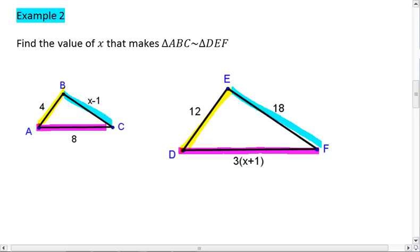I can see that 4 corresponds to 12, so the triangles are in a ratio of 4 to 12. I can solve for X down here, giving us 8 to 3X plus 1.